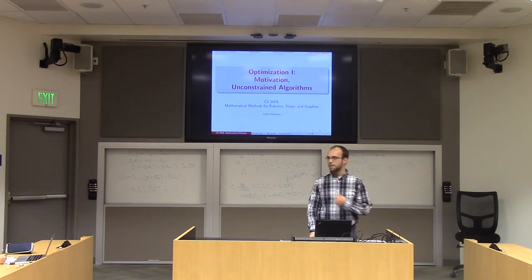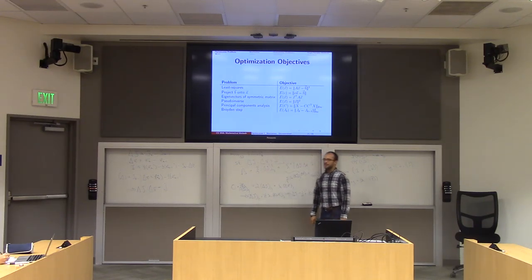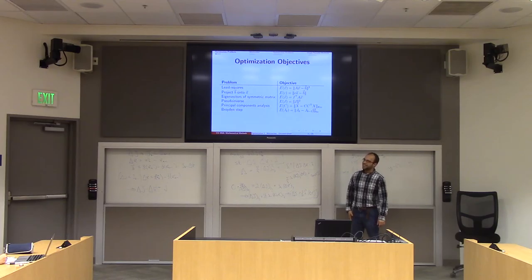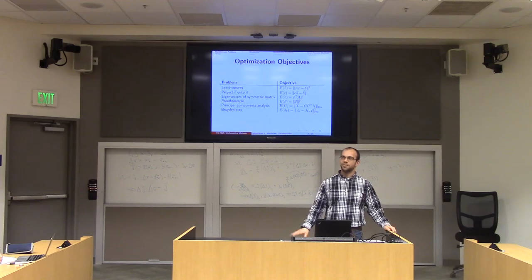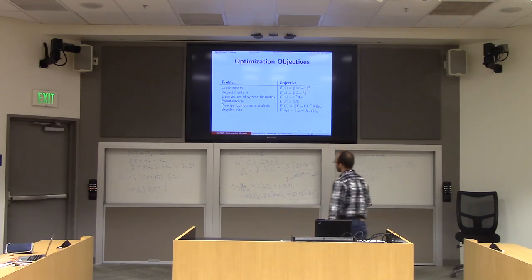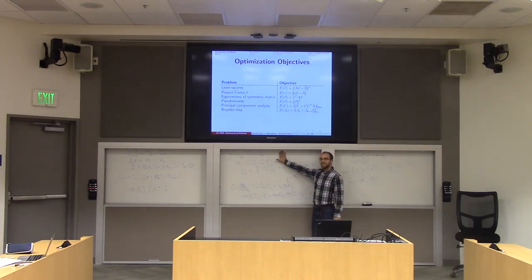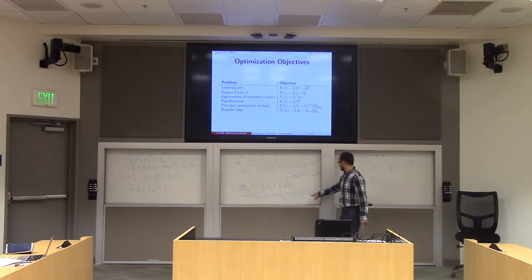In CS205, we're in this variational approach — every time we want to do some calculation and don't know exactly how, we write down an energy function measuring desirable properties of what we're trying to do, and then minimize it. So far I've chosen minimization problems strategically so we could write down a formula for the minimum. For example, in Broyden's algorithm, we wrote down a minimization and with a bit of algebra came up with a closed-form formula for delta J.